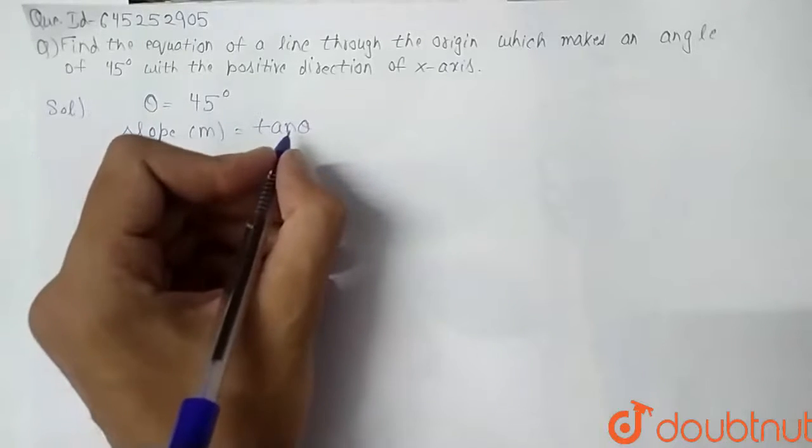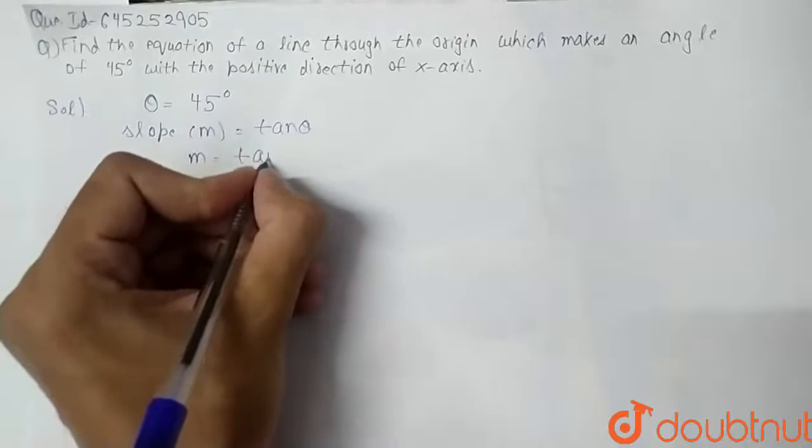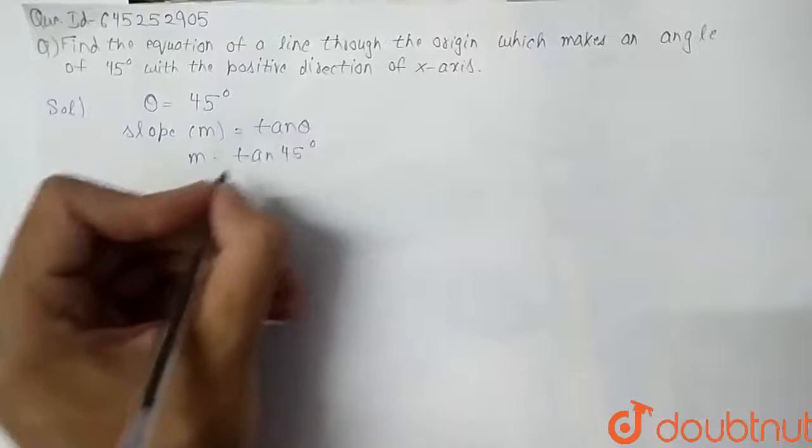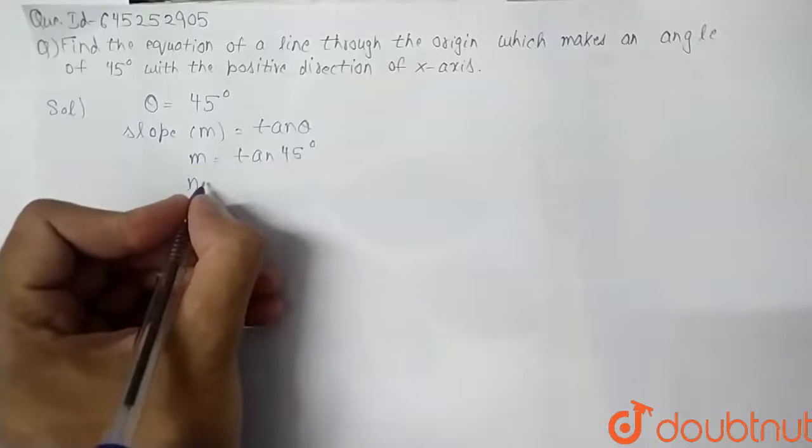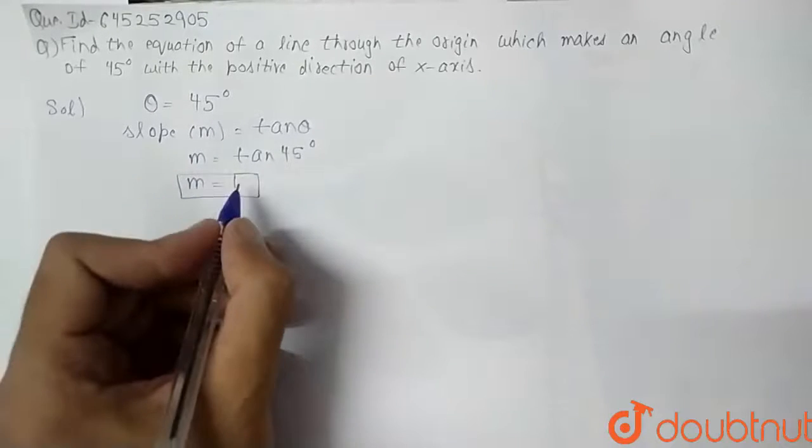Similarly, since we have theta is 45 degrees, we can say that m equals tan of 45 degrees. Tan of 45 is 1, so m equals 1, so the slope equals 1.